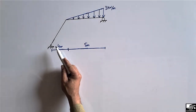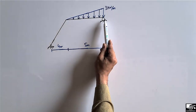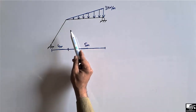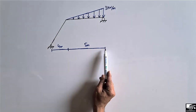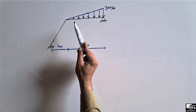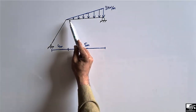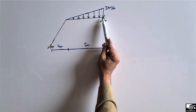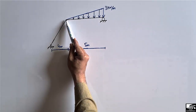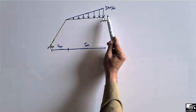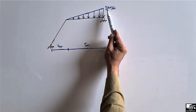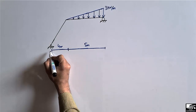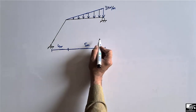This is a frame which consists of one horizontal member and one inclined member. The dimensions of this frame are given, and there is a triangular load — or uniformly varying load — acting on this beam. The magnitude starts from zero at one end and ends with a maximum magnitude of 3 kN per meter. We are interested to find out the support reactions for this frame.